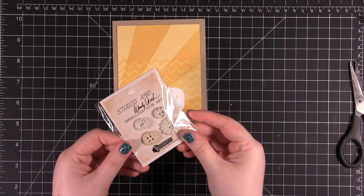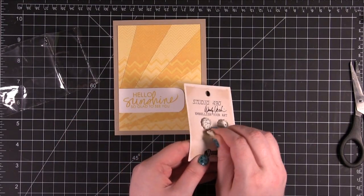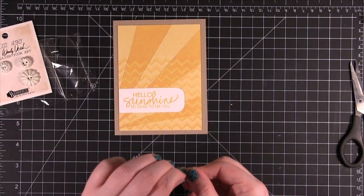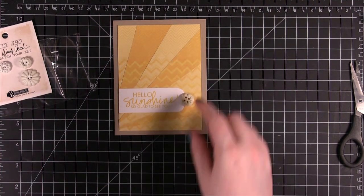All right, now I have these really cute buttons that are new to the Simon's store. I'm going to use this one right here. It's the most yellow. I'm going to take the glue off the back and it's going to go just right there on the side.